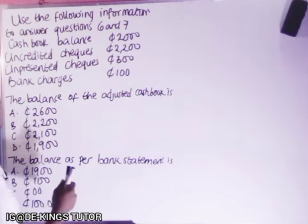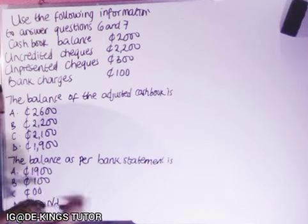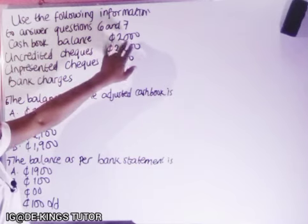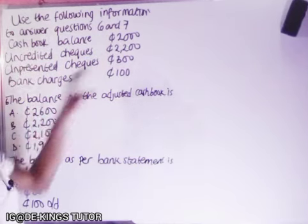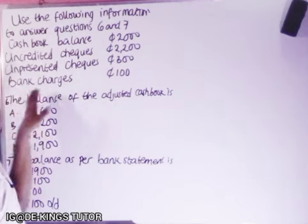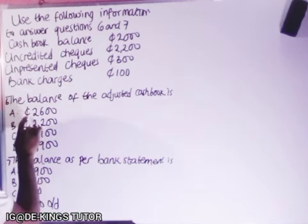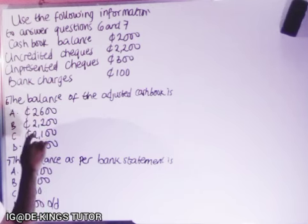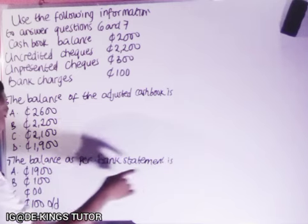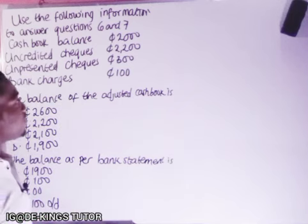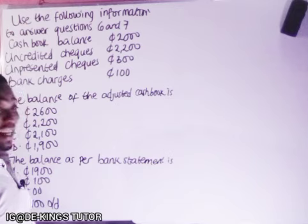The question says: use the following information to answer questions six and seven. The cash book balance is 2,000 cedis; uncredited cheque 200 cedis; unpresented cheque 300 cedis; bank charges 100 cedis. Question six asks: the balance of the adjusted cash book is — A) 2,600 cedis, B) 2,000 cedis, C) 2,100 cedis, D) 1,900 cedis. Question seven asks: the balance as per bank statement is — A) 1,900 cedis, B) 100 cedis, C) zero cedis, D) 100 cedis overdraft.